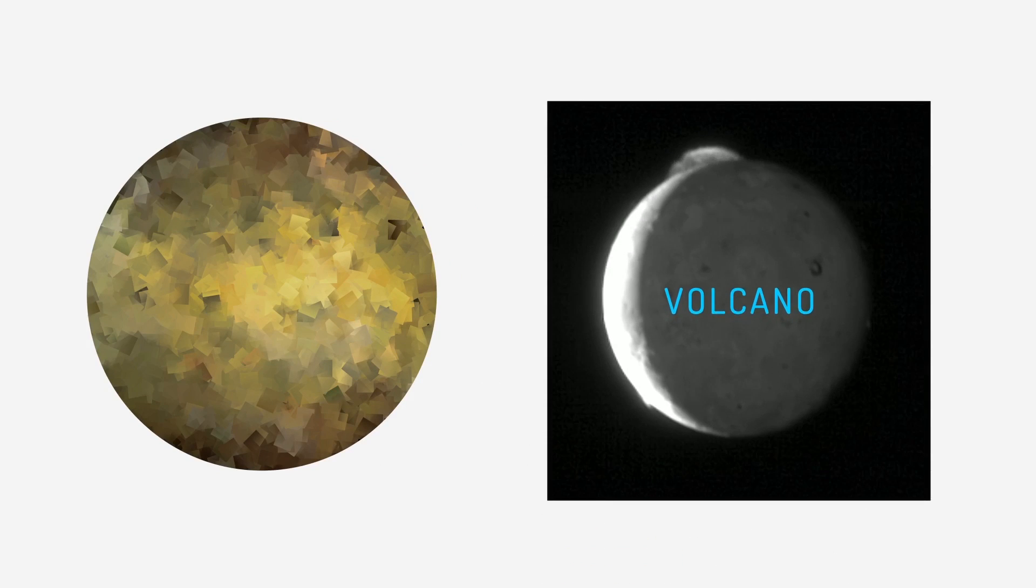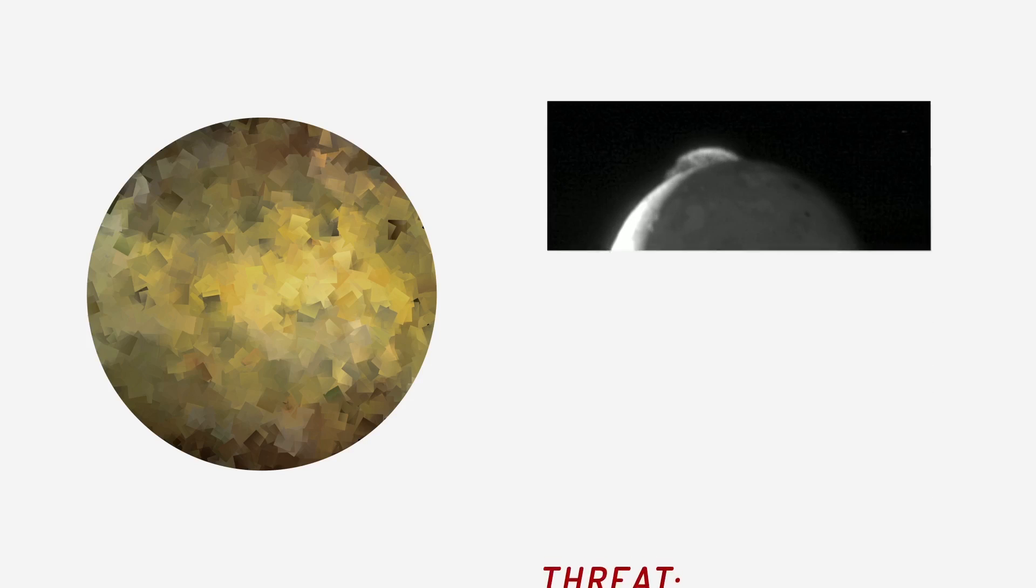Although the surface temperature is around negative 100 degrees celsius, the volcanoes can reach around 1600 degrees celsius. Because of this, Io is the most geologically active body in the solar system.